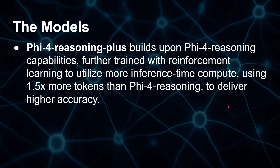There's also the Phi-5.4 reasoning plus, which is built upon Phi-5.4 reasoning but trained even more. Its chain of thought is longer — it outputs about 1.5 times more tokens than Phi-5.4 to deliver higher accuracy. The chain of thought gives you extra capabilities without necessarily having to increase the number of parameters in the model.